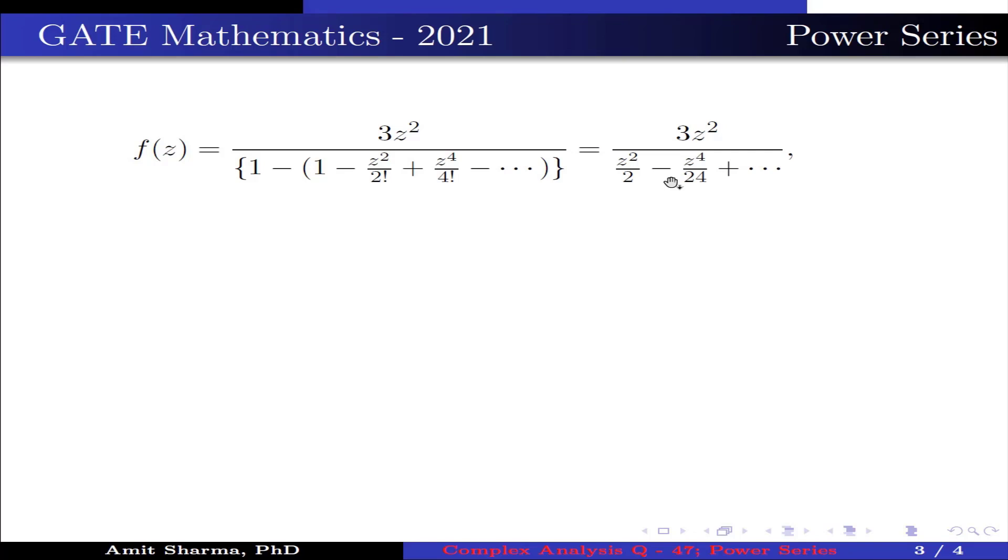Taking z²/2 common from the denominator, we get 3z²/[(z²/2)(1 - z²/12 + ...)]. After simplifying, we get 6/(1 - z²/12 + ...).